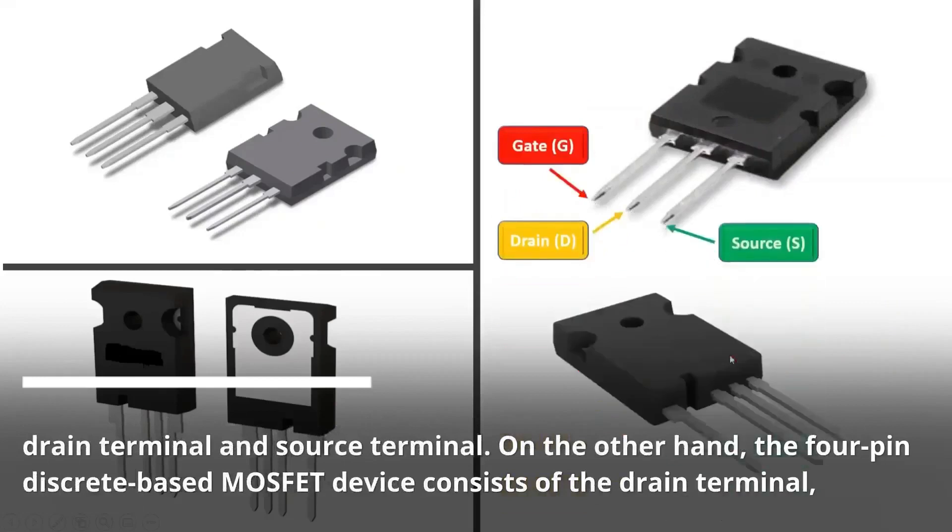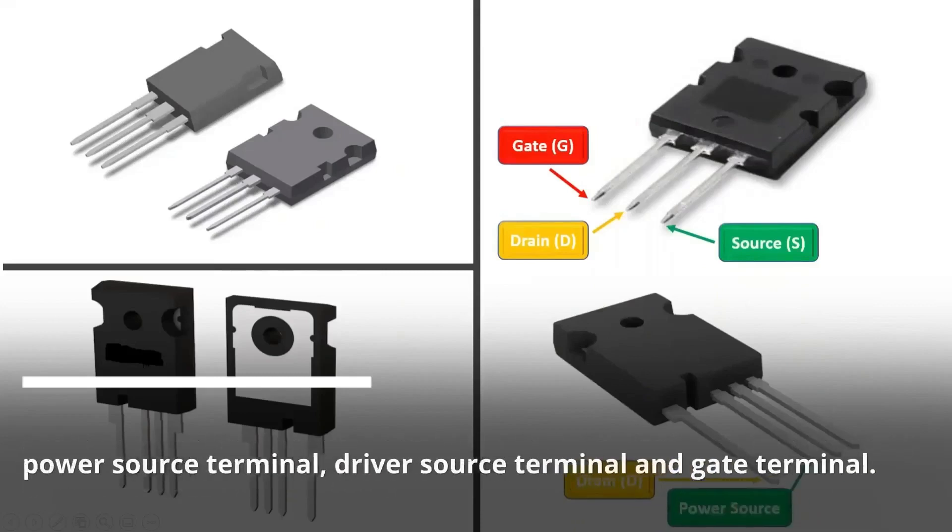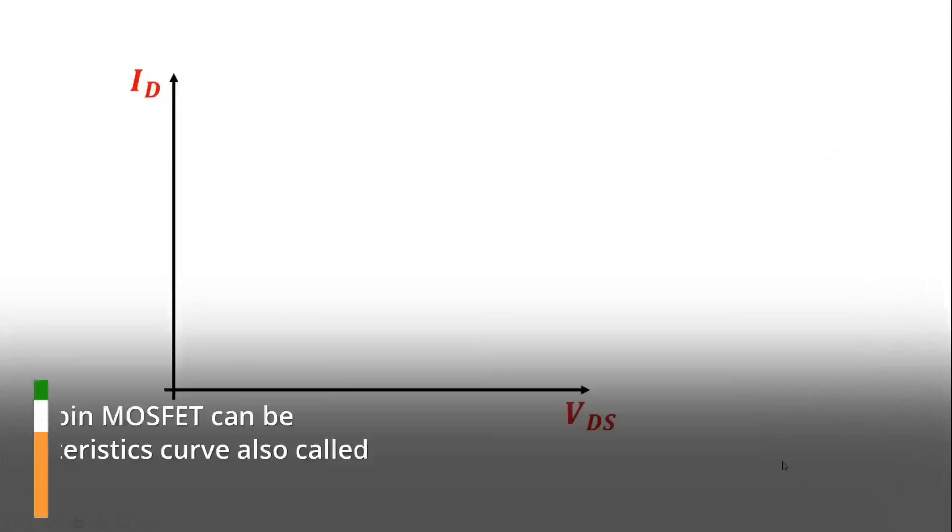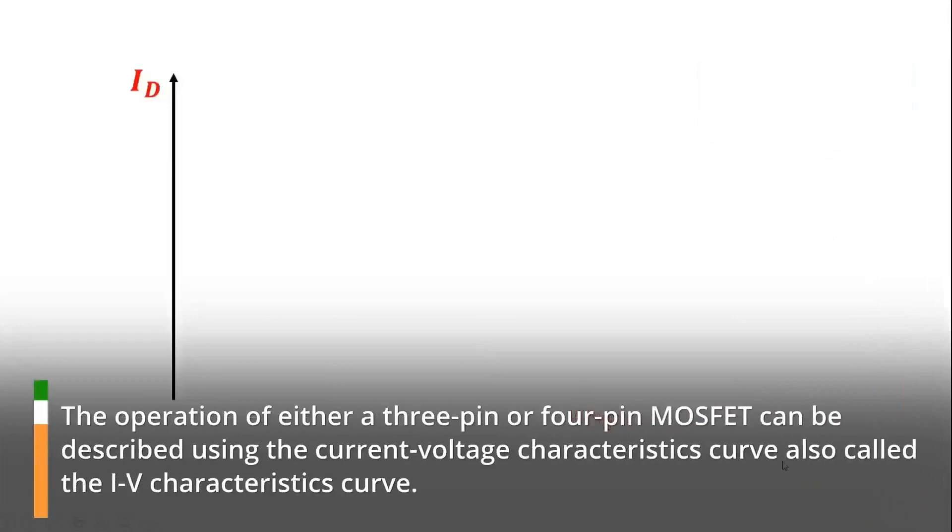On the other hand, the four-pin discrete-based MOSFET device consists of the drain terminal, power source terminal, driver source terminal, and gate terminal. The operation of either a three-pin or four-pin MOSFET can be described using the current-voltage characteristics curve also called the I-V characteristics curve.